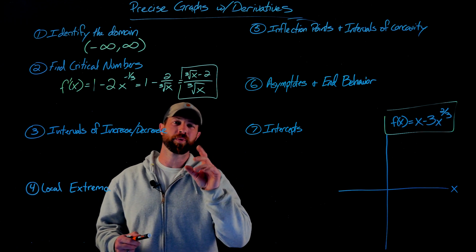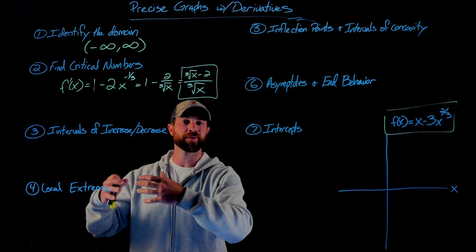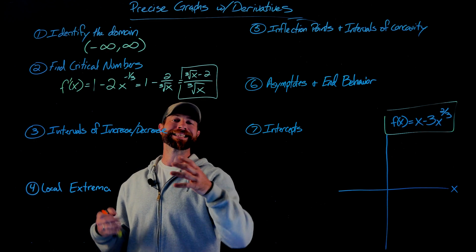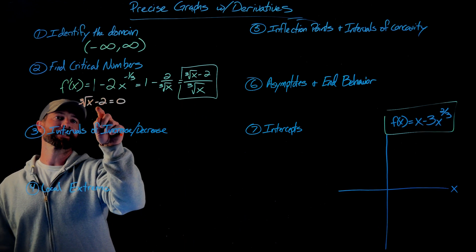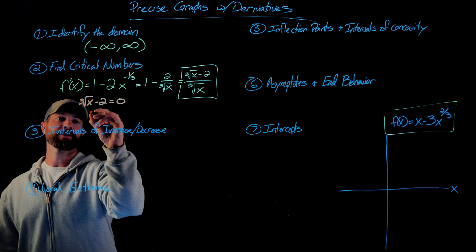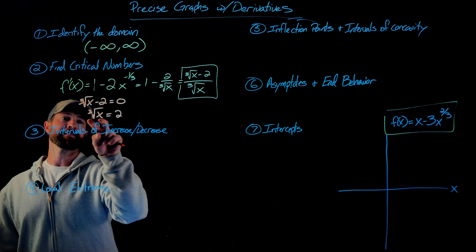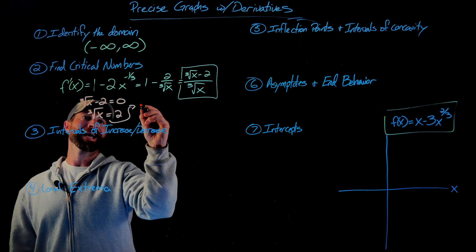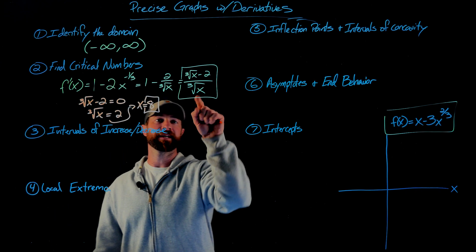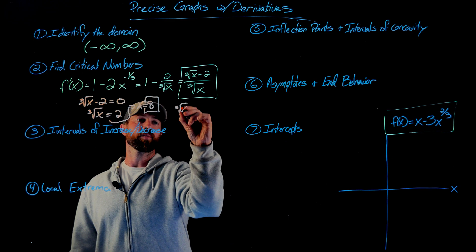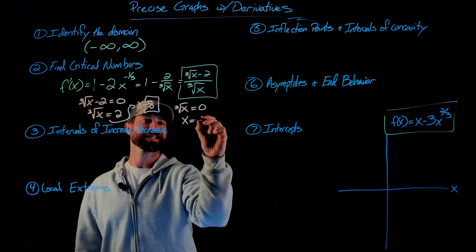To identify the critical numbers, I set the numerator equal to zero and the denominator equal to zero. Starting with the numerator: the cube root of x minus 2 equals zero, so cube root of x equals 2, and cubing both sides gives x equals 8. For the denominator: when is the cube root of x equal to zero? Cubing both sides gives x equals 0. So my critical numbers are x = 0 and x = 8.